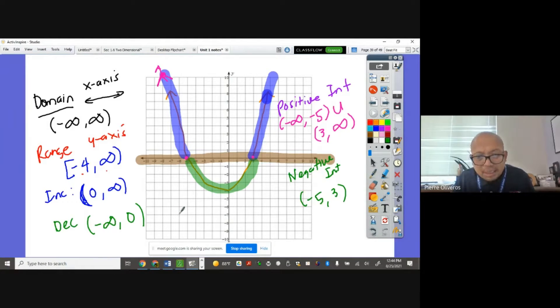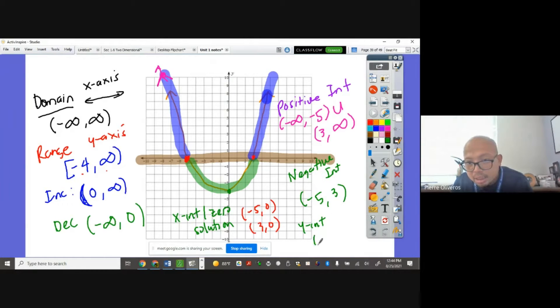let's find the x-intercept or the zeros or the solution. Where does the graph cross the x-axis? It's at this point, at that point. So that's going to be negative 5, 0 and 3, 0. Do we have y-intercept? Yes. What's our y-intercept? This point here, it's 0, negative 4. Okay?